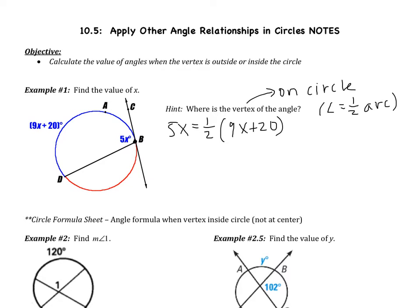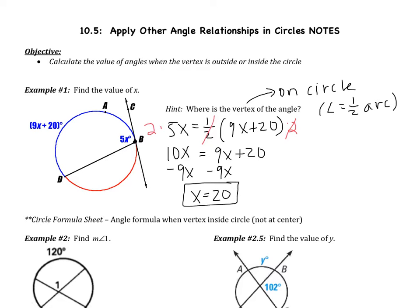I don't really like fractions, so I'm going to multiply both sides by 2. On the left side, that cancels out my one half, and I'm left with just 9x plus 20. 2 times 5x on the left side gives me 10x. If I subtract 9x, I get x equals 20. So when the vertex is on the circle, the angle is going to be half of the arc.